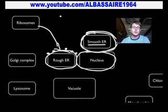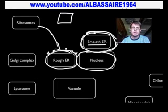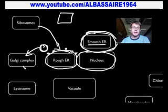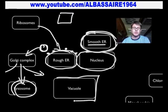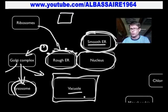Some ribosomes float around in the cytoplasm, but some are found right on the rough ER, and they make proteins. Those proteins will be trapped in transport vesicles and brought to the Golgi complex. From there they can go to different parts of the cell or outside the cell. It's also where we produce lysosomes, and lysosomes are important in breaking down material when it's no longer needed. Another organelle, especially in plant cells, is the vacuole, which is important for storage.